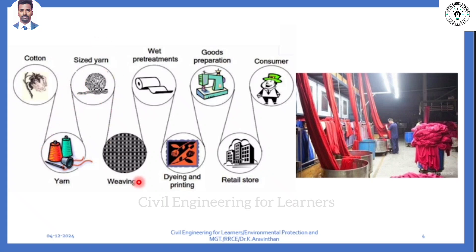Weaving means making fabric into different sizes. After fabric, it goes into wet pretreatments. We get different colors in our clothing - naturally, cotton is only one color, but many colors are produced through this process called wet pretreatment. They use pigments - chemicals applied under high pressure and temperature in a container - to produce different colors. From this treatment, the major contaminant wastes are discharged into the environment.